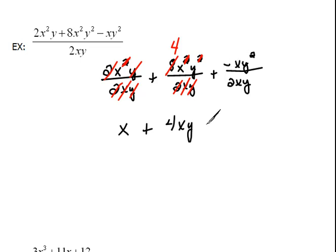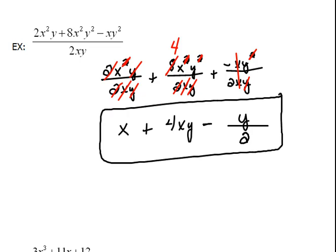Now we're adding a negative, so that's going to be minus. Let's see what we'll cancel here. Our x's, we have one on top, one on bottom. And then this y will cancel into one of those. So what we have left now on top is a y and on bottom is a 2. That would be the division.